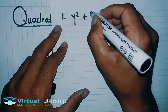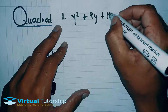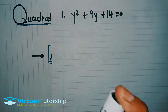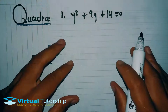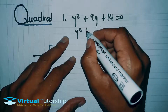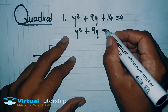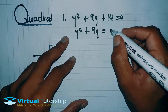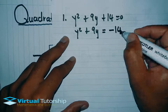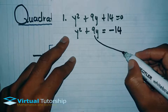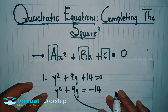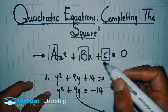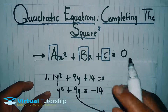Okay, I started this example. y squared plus 9y plus 14 is equal to zero. I'm going to complete the square on this quadratic equation. The first thing I'm going to do is take y squared plus 9y, and transpose 14 to the right-hand side — the c value to the right-hand side. So it becomes y squared plus 9y equals negative 14. Here, 14 is the c value and positive 9 is the b value.